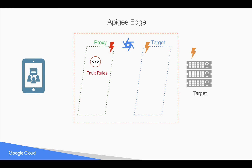Similarly, whenever the target returns some exception like 400 or 404 — any error that is happening on the target — then the same fault handling has to be done on the target endpoint. So if any fault occurs at the target, you're going to write the fault rules in the target endpoint.